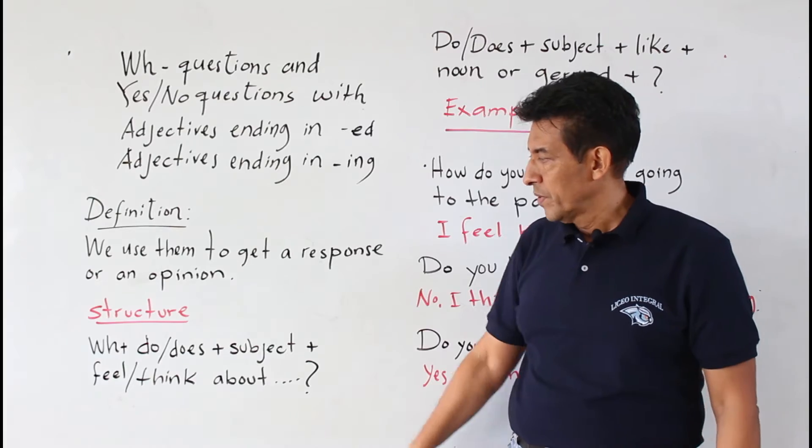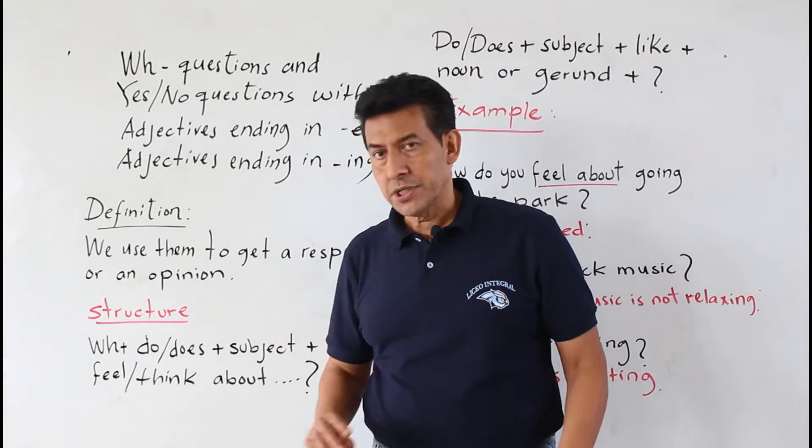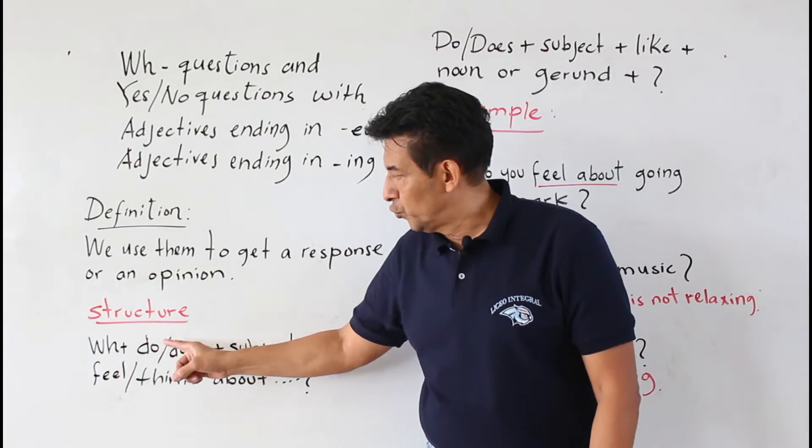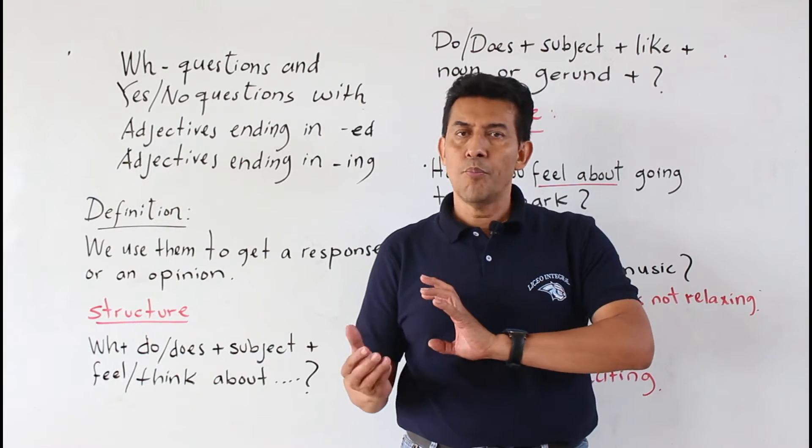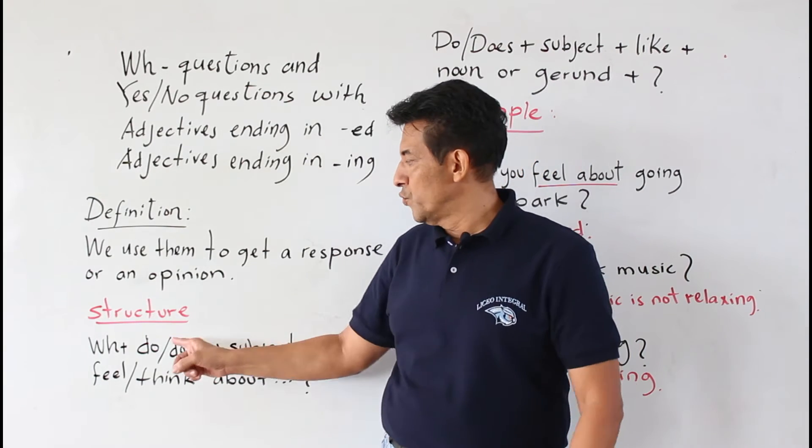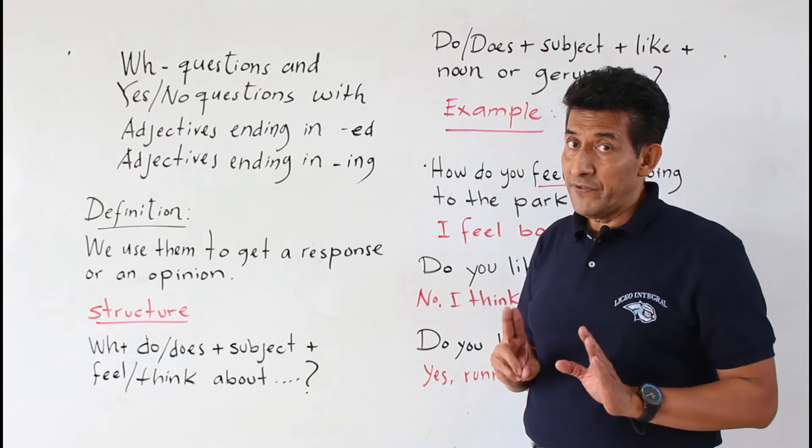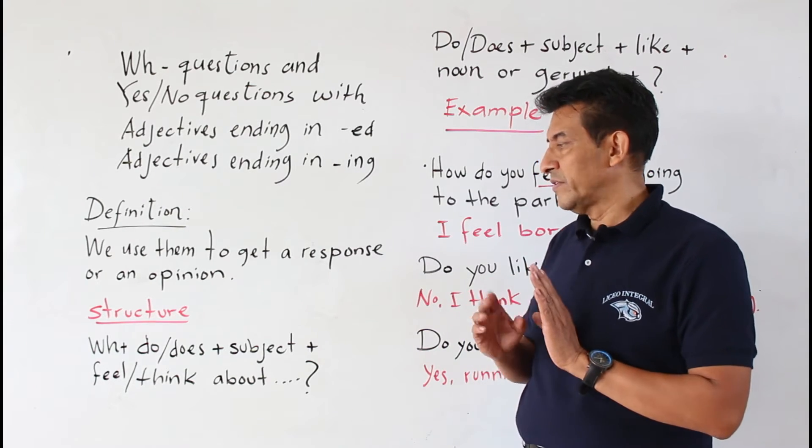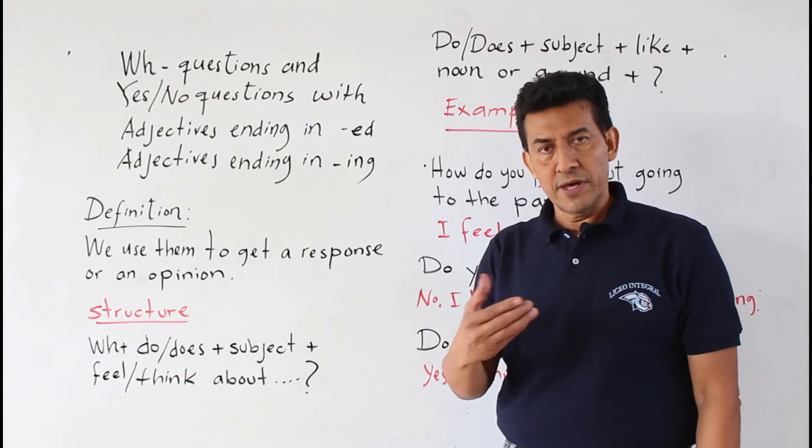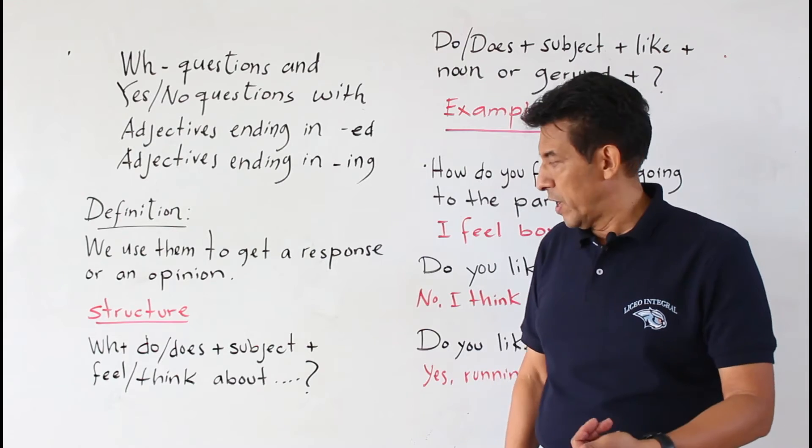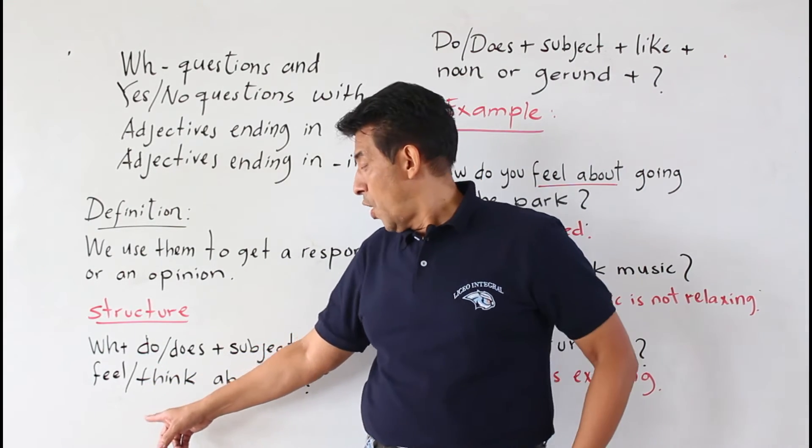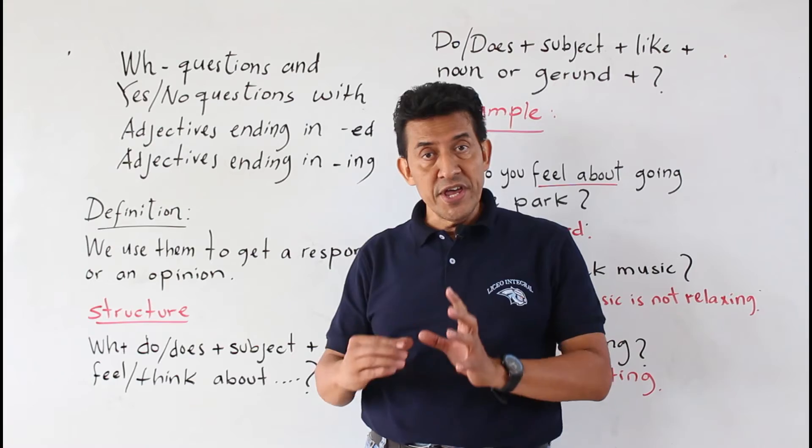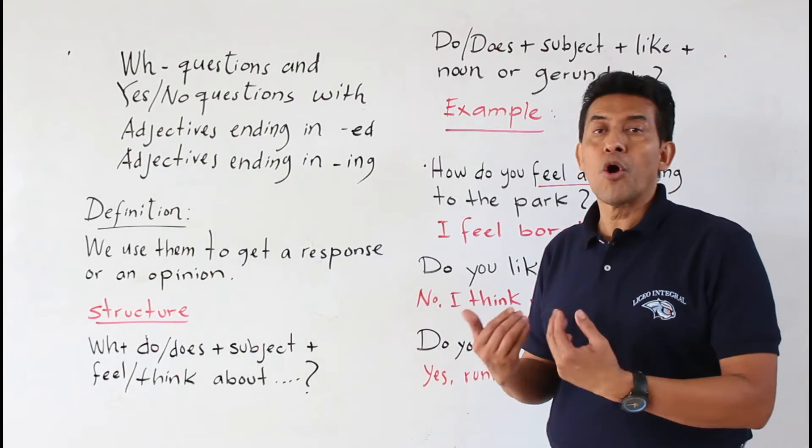Veamos la primera estructura, utilizamos WH plus do o does. Do o does es un verbo auxiliar que acompaña a la pregunta y do en does debe de hacer referencia que debe de utilizarse depende del sujeto que estamos en esa oportunidad mencionando, más podemos utilizar feel about o think about plus el complemento.